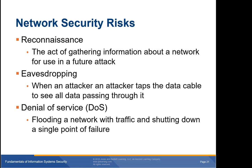DDoS attacks have been around for years and attackers still use them. Back in 2012, a group of hacktivists launched a series of denial of service attacks against major US banks including US Bancorp, JPMorgan Chase, Bank of America, PNC Financial Services, and SunTrust Banks. These attacks continued through 2012 and into 2013 and beyond, causing customers to experience slow bank websites or inability to reach their banks online at all. The banks were learning from earlier attacks and added new controls to protect their websites.